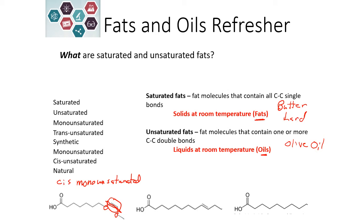Because it is cis, these are naturally occurring — cis monounsaturated fats occur in nature. Trans unsaturated fats are synthetic. Also, one of these classifications should say poly: if you have more than one double bond, it would be a polyunsaturated fat.